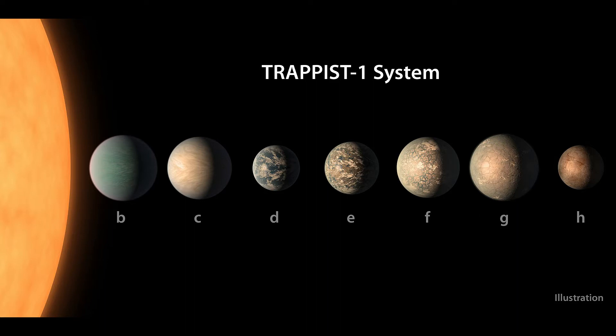All seven of TRAPPIST-1's planets orbit much closer than Mercury orbits the Sun. The planets should appear prominently in each other's skies, in some cases appearing several times larger than the moon appears from Earth. A year on the closest planet passes in only 1.5 Earth days, while the seventh planet's year passes in only 18.8 days.